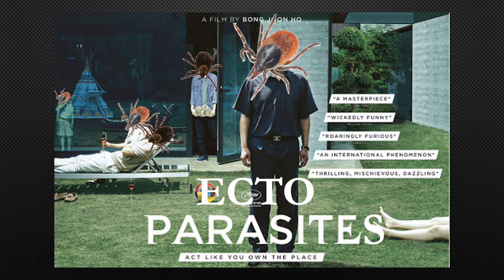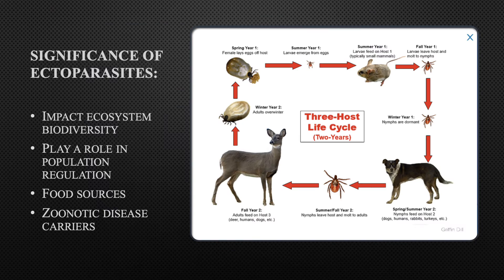Let's talk about parasites, specifically ectoparasites. Ectoparasites can affect ecosystem diversity and play a role in population regulation, both as a disease carrier and a food source. Many parasites carry diseases that they can transmit to their hosts, which can then be transmitted to new parasites, and the cycle continues. Ticks are one group of organisms especially prone to transmitting zoonotic diseases. It is not common for just one parasite species to be present on a host, and since many ectoparasites are blood feeders, they can affect their hosts physiologically and behaviorally.